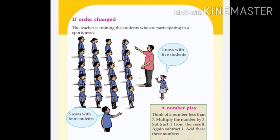The teacher is training the students who are participating in a sports meet. Ok, what is the girl saying? Yes, 4 rows with 5 students. What is the boy saying? Yes, 5 rows with 4 students.